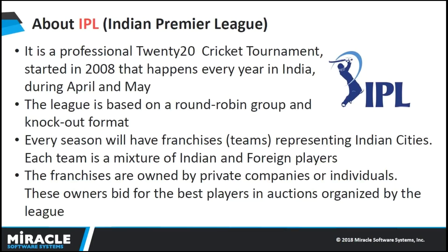Each team represents an Indian city, like Chennai Super Kings, Mumbai Indians, etc. In the tournament, 20 overs are allowed for each batting side to score as many runs as they can. Each team plays with every other team both at home and away in a round robin system. The top four ranking teams progress to the knockout stage of semifinals, followed by a final game.